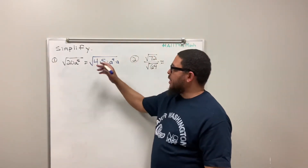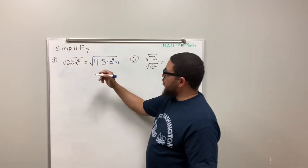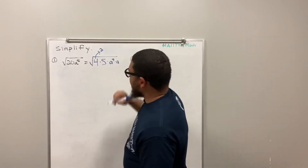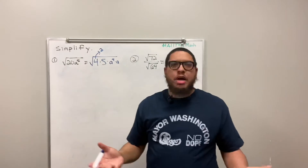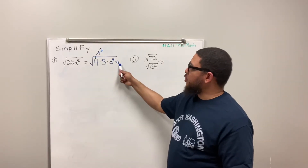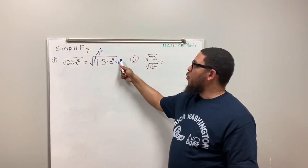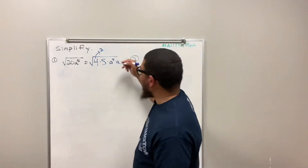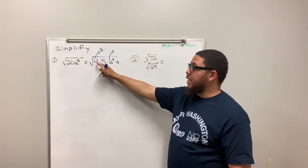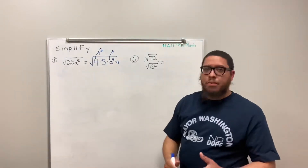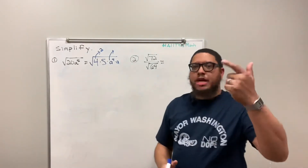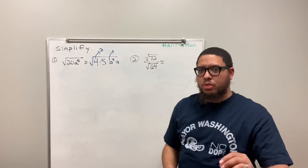What I can take out are the perfect squares. 4 is a perfect square, so it's going to come out. When it comes out, it turns into a 2. A to the 4th is a perfect square because any variable or number is a perfect square if it has an even-numbered exponent. When a variable with an even-numbered exponent comes out of the radical, you divide that exponent by 2 — that's the square root.